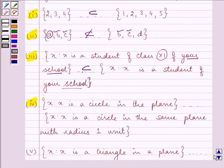Proceeding further, we have X such that X is a circle in a plane, and X such that X is a circle in the same plane with radius 1 unit. There can be a circle with radius more than 1 unit, so will it be a subset of this set? No, we will say that it is not a subset.